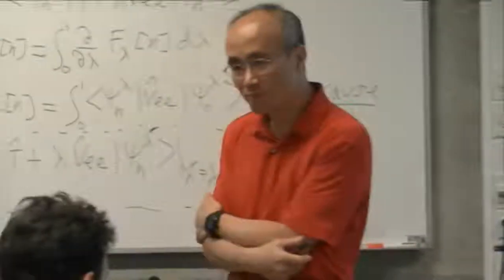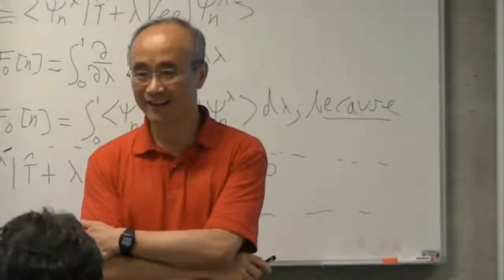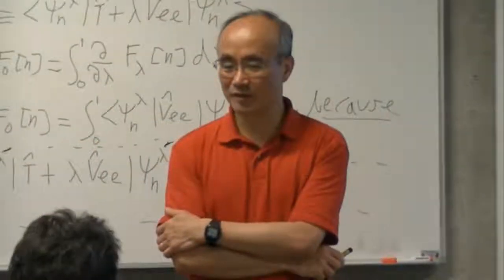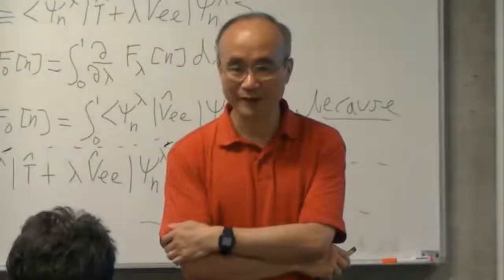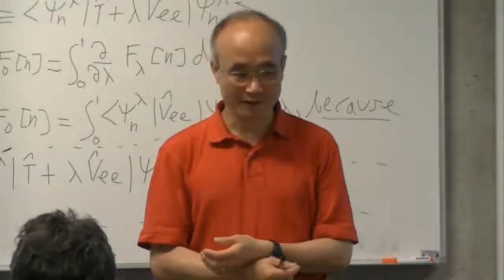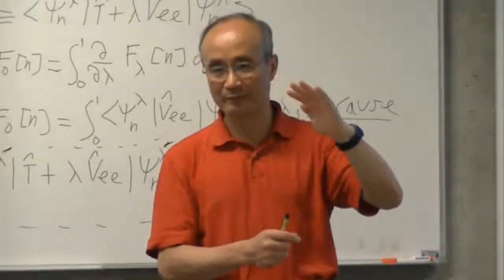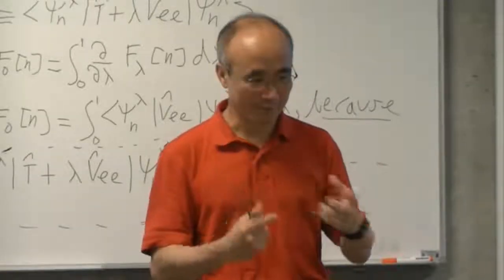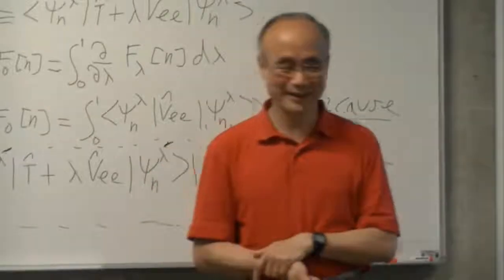Regarding why PP-RPA performs better than PH-RPA in thermochemistry: the formal computational scaling is similar, but in practice PP-RPA for correlation energy is more expensive. The reason PP-RPA error grows less with number of electrons may be that PP-RPA describes electron pairs well — one pair at a time — and that may be the reason, though there is no better mathematical explanation at present.